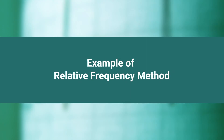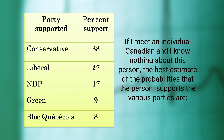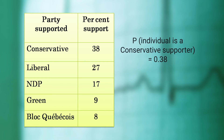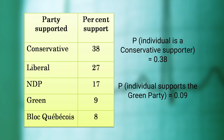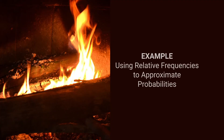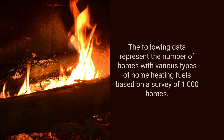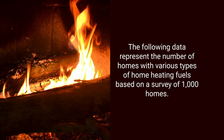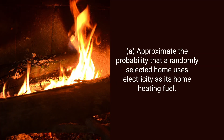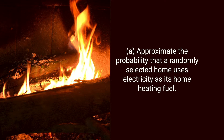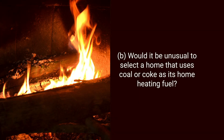An example of the relative frequency method: parties supported are Conservative, Liberal, DP, and Green, with percent support of 38, 27, 17, 9, and 8 respectively. If one meets an individual and knows nothing about this person, the best estimate of the probability that the person supports various parties — for example, the probability that the individual is a Conservative supporter is 0.38, and if the individual supports the Green party it is 0.09. Another example uses data representing the number of homes with various types of home heating fuels based on a survey of 1,000 homes to approximate the probability that a randomly selected home uses electricity as its home heating fuel.